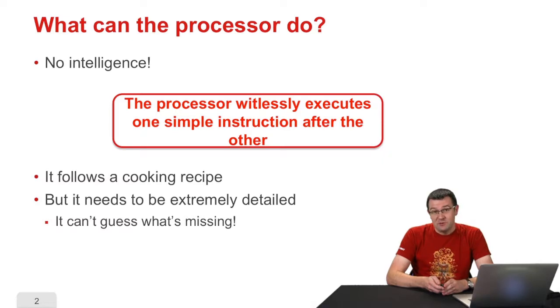But the cooking recipe needs to be thoroughly detailed. The computer is not capable of guessing what's missing, so if it is given a cooking recipe saying that it needs to whip egg whites to a light mousse, it must also be told that it needs to break the eggs and separate the egg whites from the yolks.